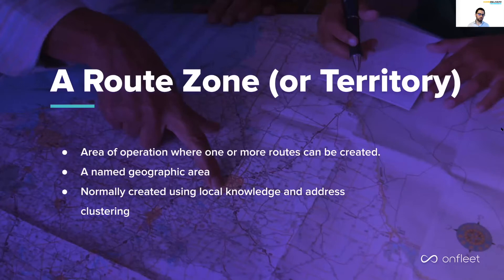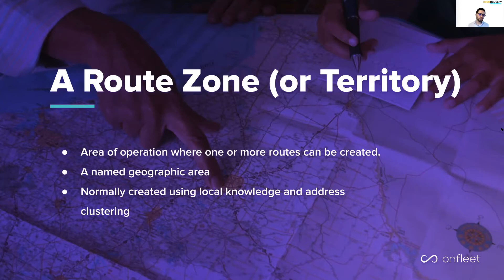Today, route engineers use tools that cluster addresses together and delineate the zones using land features, highways, or neighborhood barriers. Once created, these do allow for stops to be grouped and ordered by a human or an algorithmic routing optimization engine. Over a long enough period of time, zones are tweaked as feedback from drivers and route performance is considered, and eventually these do settle into reasonably efficient states. This is how many scheduled delivery organizations have operated for years.